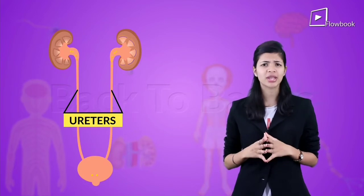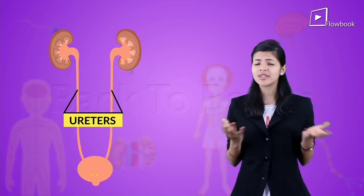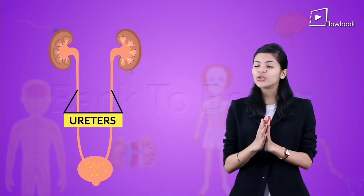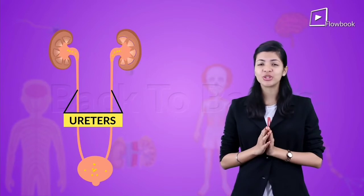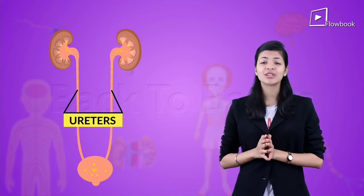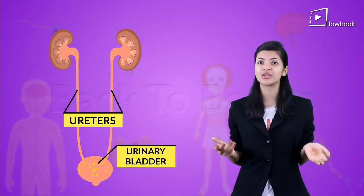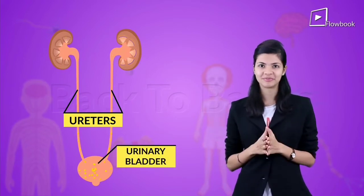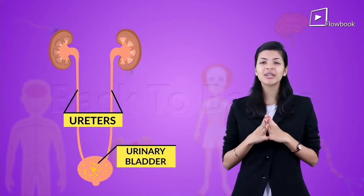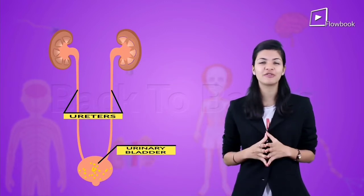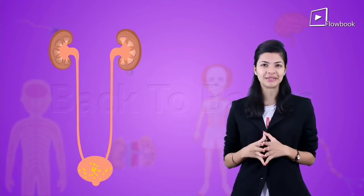But what is this ureter? The ureter is a tubule which carries the urine from the kidney to the urinary bladder. The urinary bladder gets full and that's when you feel like peeing.